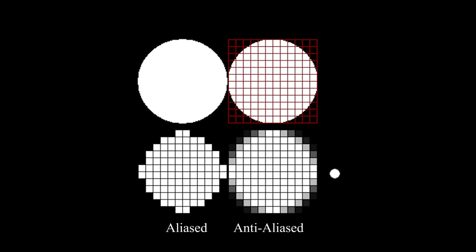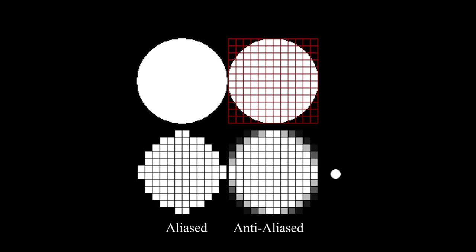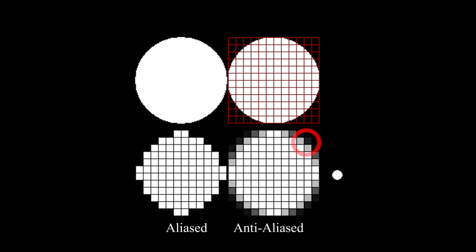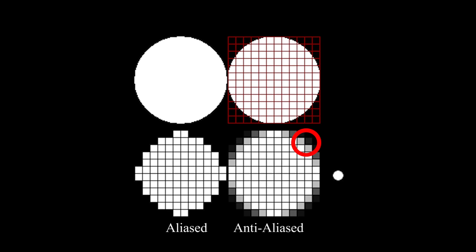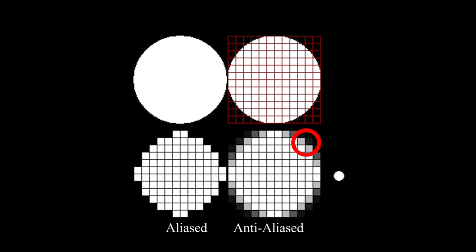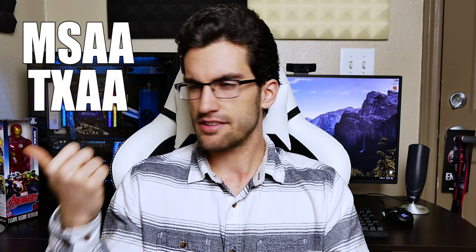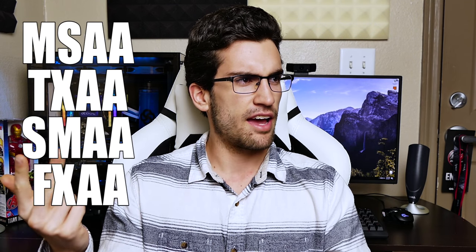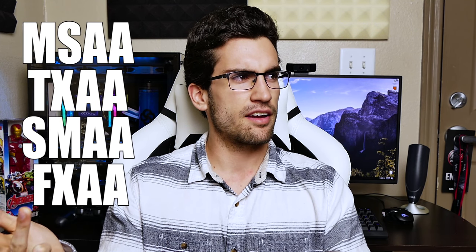Anti-aliasing seeks to reduce the sharp edges by reducing sharpness and blending transition zones between two surfaces that aren't vertical or horizontal. But there are several types of anti-aliasing: MSAA, TXAA, SMAA, FXAA — those are the four we'll cover in this video.